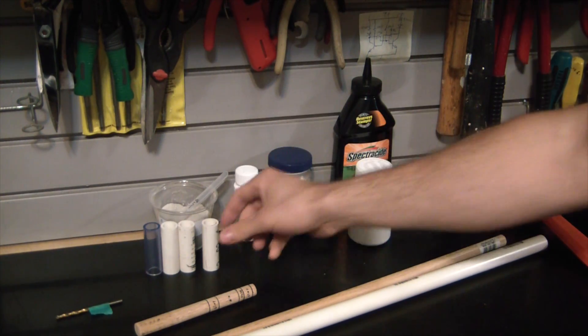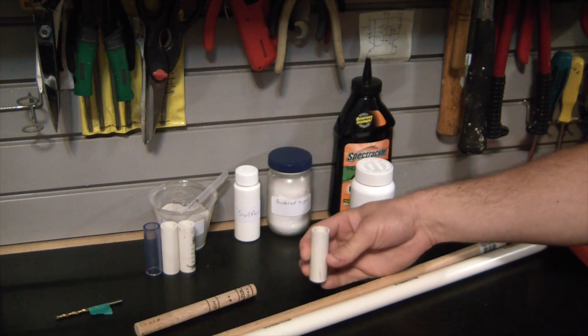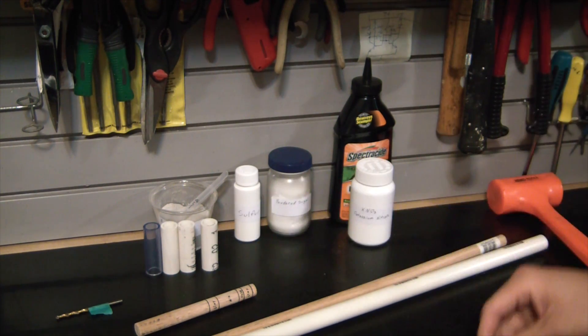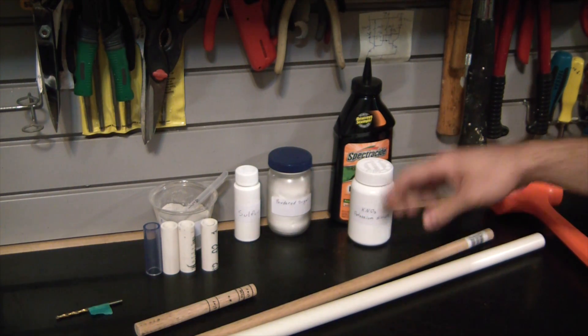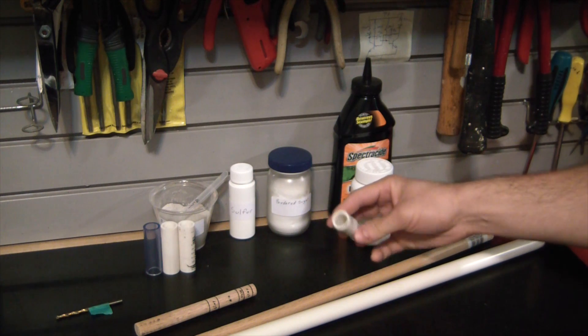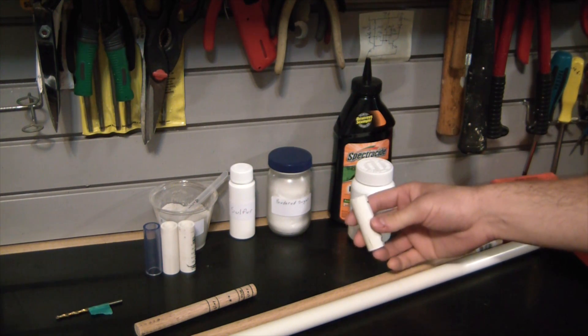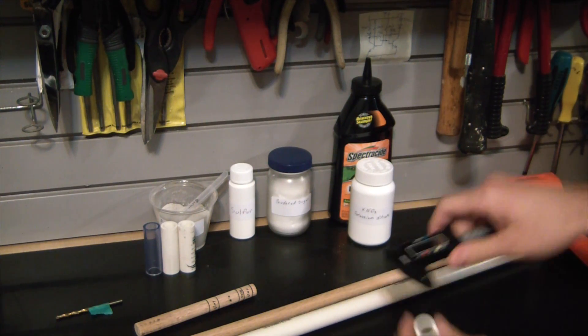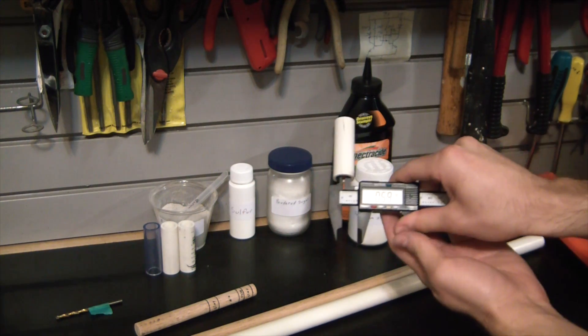You're also going to want some two and a half inch sections of PVC pipe. This is one half inch inner diameter PVC, schedule 40. You're going to want a five eighths inch dowel. Now the thing here is the half inch PVC, that's a nominal rating, so it's not actually going to be half inch. The inner diameter you can see here is actually more along the lines of 0.6.